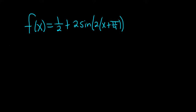The first step when graphing one of these functions is you take whatever is here — I've underlined it in yellow — and you set it between 0 and 2π.